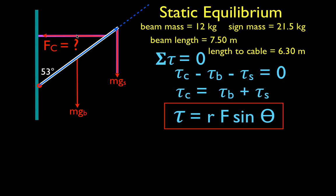Let's figure out the angles. Drawing a horizontal line shows this angle is 90 degrees. If that angle is 90 and the beam makes 53 degrees with the wall, then this angle must be 37 degrees. If this is 37 and this is 90, this must be 53, making theta for the beam 127 degrees — the angle between the radial vector and the beam. Therefore, theta for the sign is also 127 degrees. For the cable: with 53 and 90 degrees, this must be 37, making theta for the cable 143 degrees — the angle between the radial vector and the force vector.